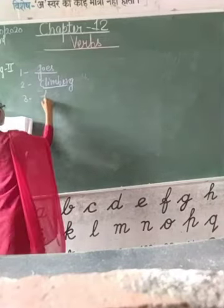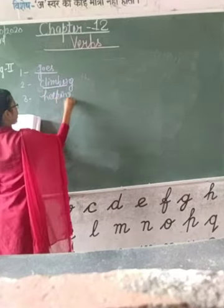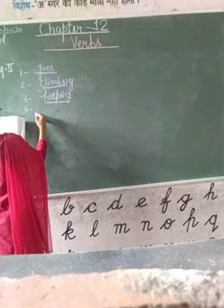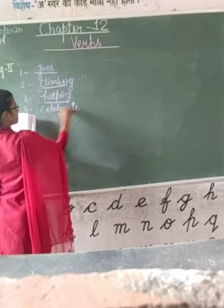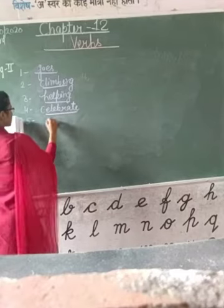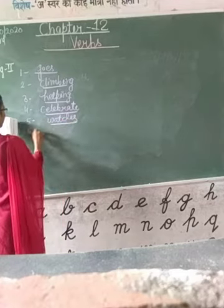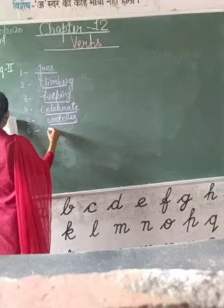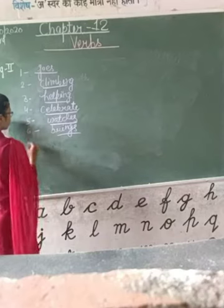Third: I am helping my mother — you will underline 'helping'. Fourth: I celebrate my birthday every year — we will underline 'celebrate'. Fifth: Edie watches TV — 'watches' is a verb, so we will underline it. Six: Santa brings toys for us — 'brings' — we will underline it.